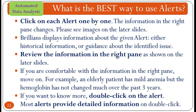What is the best way to use the alerts? Click on each alert, one by one. The information in the right pane changes. Brilliance displays information about the given alert — either historical information or guidance about the identified issue. Review the information in the right pane as shown on the later slides. If you are comfortable with the information in the right pane, move on. For example, an elderly patient has mild anemia, but the hemoglobin has not changed much over the past 3 years. If you want to know more, double-click on the alert. Most alerts provide detailed information on double-click.